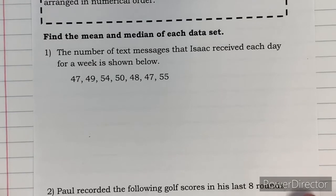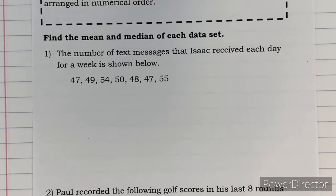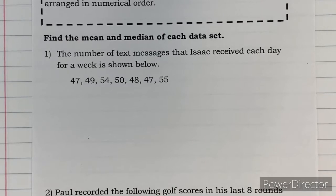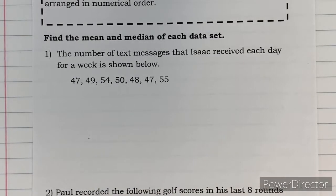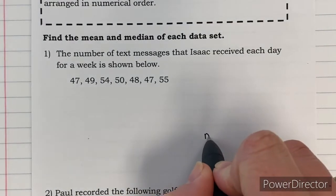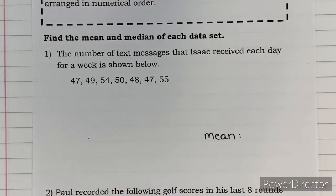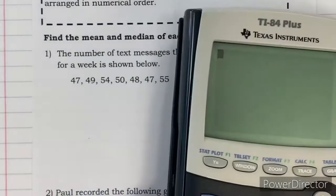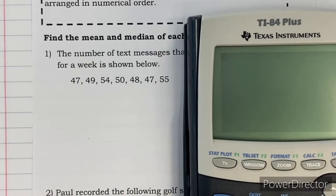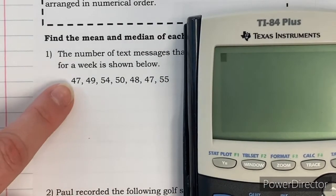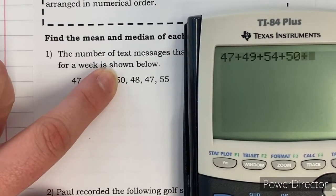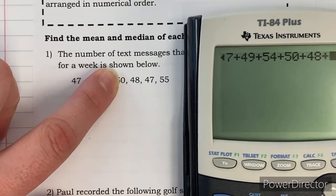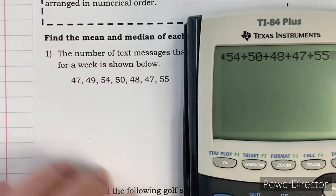Now I've just got two practice problems for us to practice together. The first one, the number of text messages that Isaac received each day for a week is shown below. We're looking at these seven numbers and the first thing that I need to do is find the mean or the average number of texts that he receives in a day. Remember, average was just add all the numbers up and divide by how many there are. The biggest mistake that I see kids make is they miss a number. So make sure that once you type it in, maybe you cover it up, mark it out, do whatever you have to do, so that way you do not miss one.